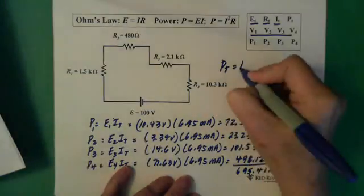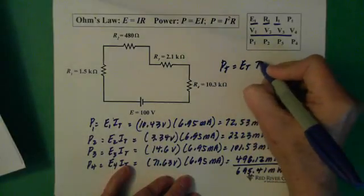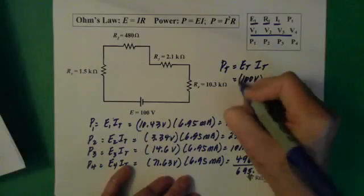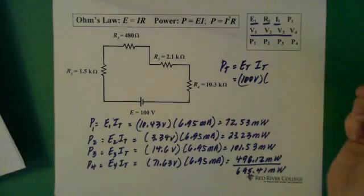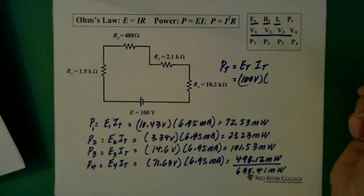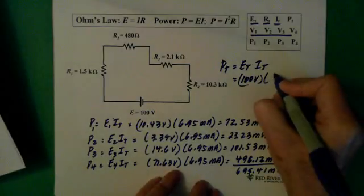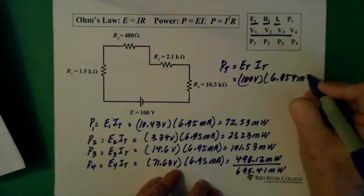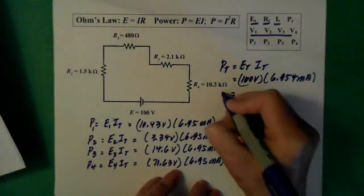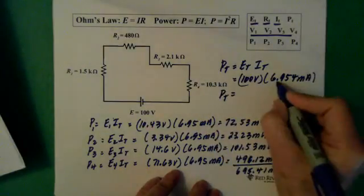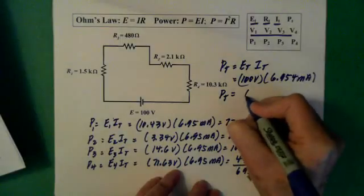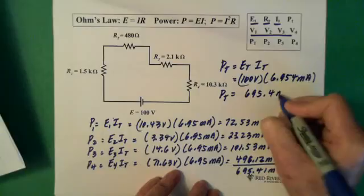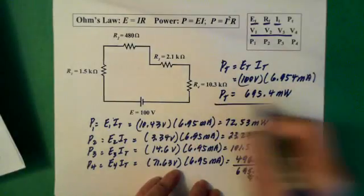Now you should always do a check. Power total equals E total times I total. E total is 100 volts, which is a nice number, times I total, which is 6.954 milliamps. So the answer for power total, move the decimal two places to the right, 695.4 milliwatts.